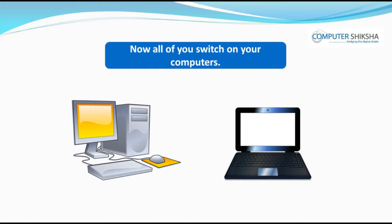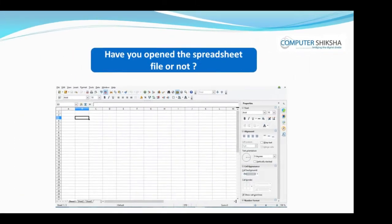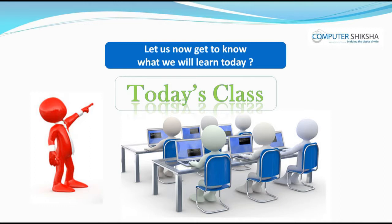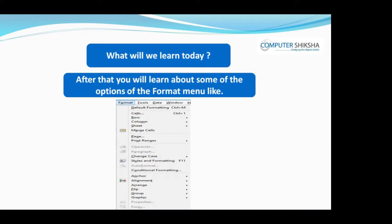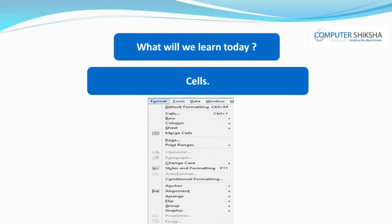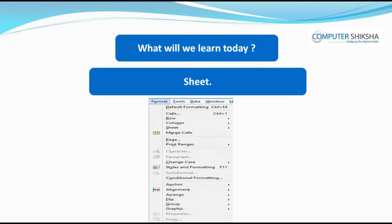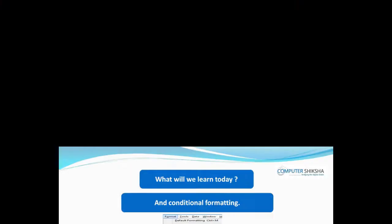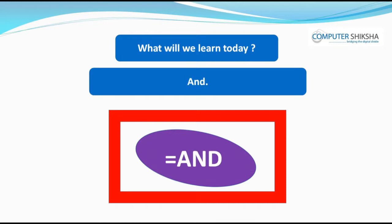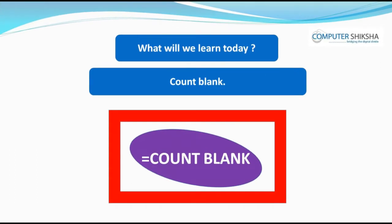Switch on your computer and open your Calc file. Let us now get to know what we will learn today. You will first make a table. After that, you will learn about some of the options of the Format Menu: Default Formatting, Cells, Rows, Columns, Sheet, Merge Cells, Page, Print Area, Character, Paragraph, Change Case, Auto Format, and Conditional Formatting. After that, you will revise some formulas like IF, AND, OR, COUNT, and COUNT blank.